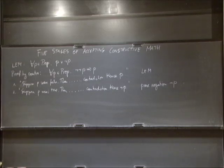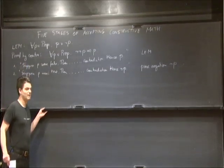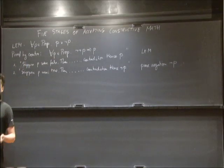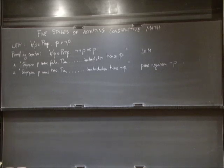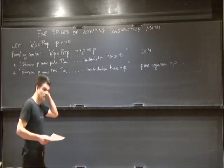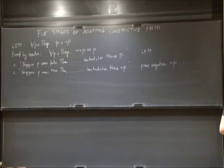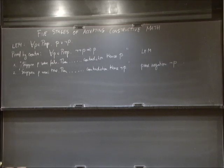There are variants of constructive mathematics where the law of excluded middle is actually false, but those are special sub-branches. When people say constructive mathematics — Bishop — there's an old joke that when Bishop worked out his constructive analysis, he missed the name: he should have said 'ecumenical', not 'constructive'.